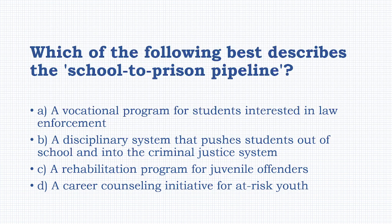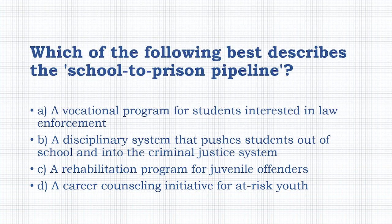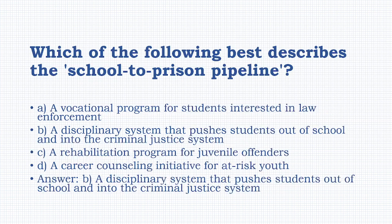Which of the following best describes the school-to-prison pipeline? Options: a vocational program for students interested in law enforcement, a disciplinary system that pushes students out of school and into the criminal justice system, a rehabilitation program for juvenile offenders, a career counseling initiative for youth. The answer is option B: a disciplinary system that pushes students out of school and into the criminal justice system.